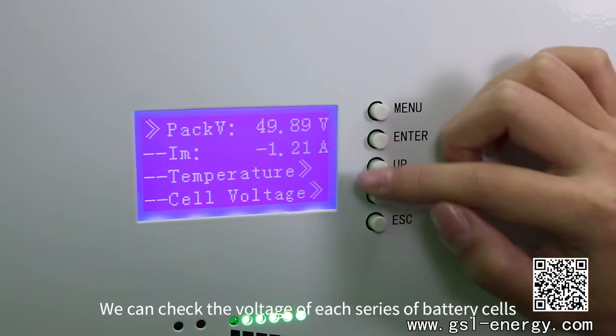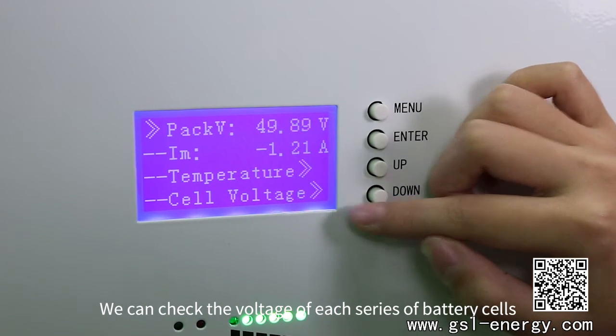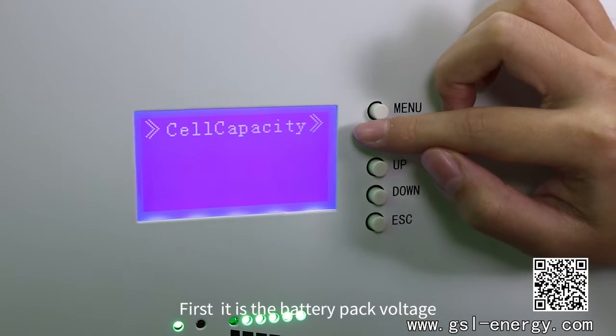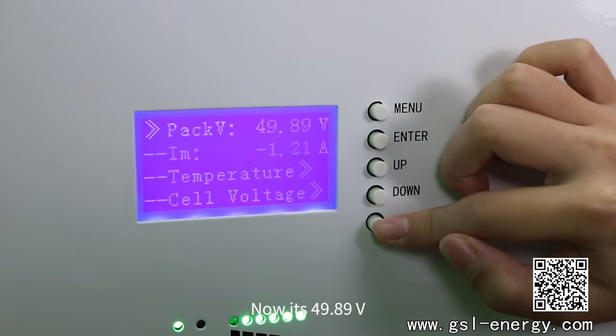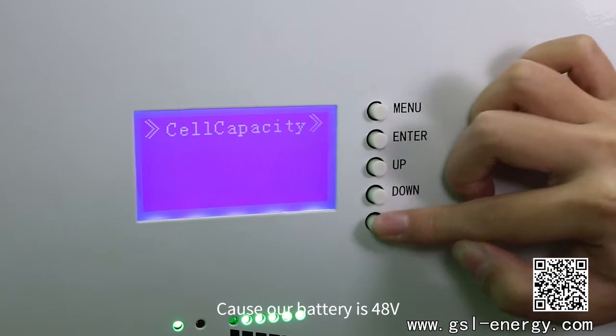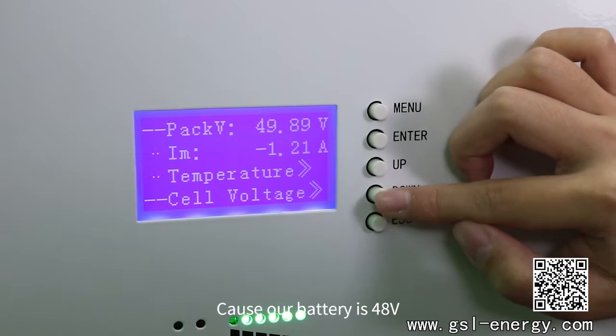We can check the voltage of each series of battery cells. Now we check it one by one. First, it is the battery packed voltage. Now it's 49.89V because our battery is 48V.